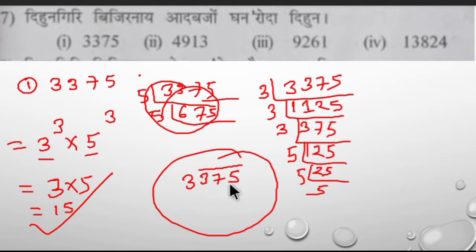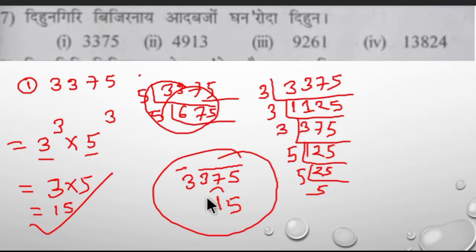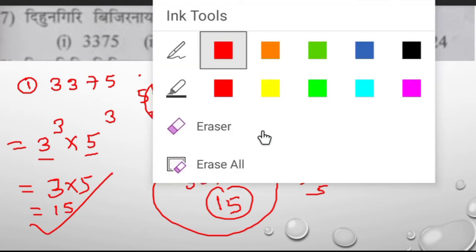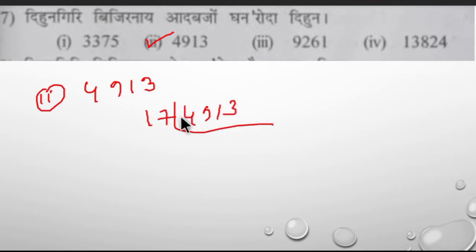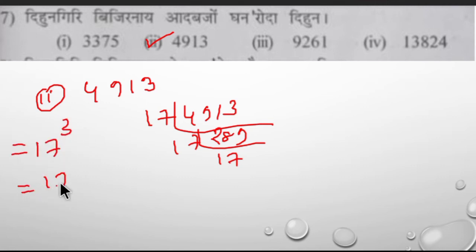It says the first question is in that case of number one. If you have the first question, it will be clear that the number is 15. Then the first question comes from number 13. So number 15 says the number 15. 4913, 4913, 4913.